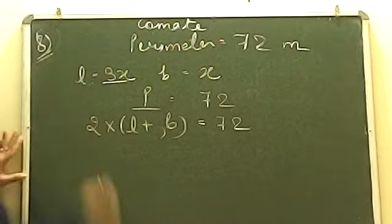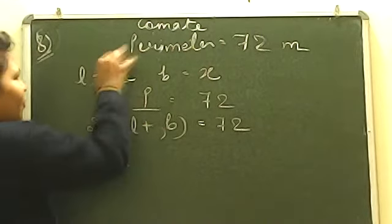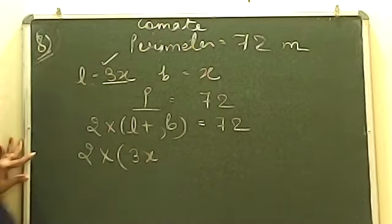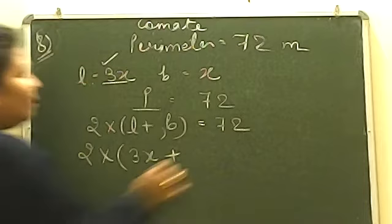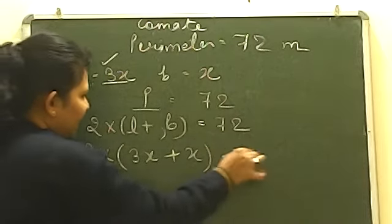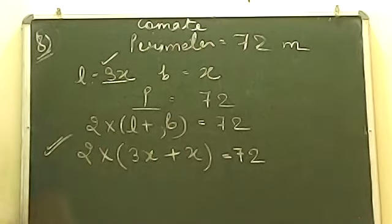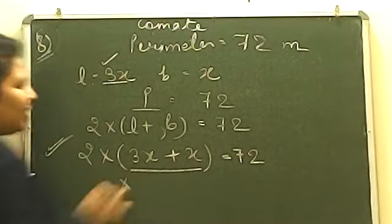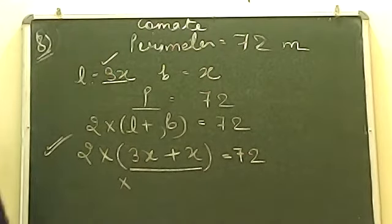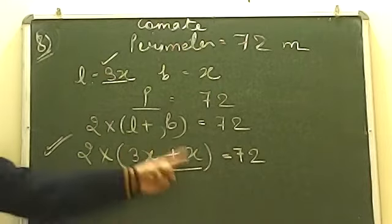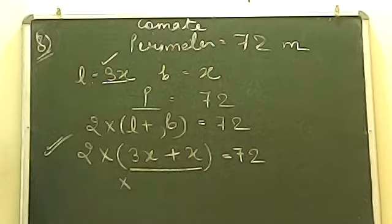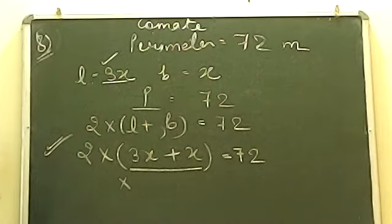Let us put in the values we know: 2 into (3X plus X) equals 72. From inside the bracket, 3X plus 1X equals 4X — just as 3 pencils plus 1 pencil gives 4 pencils. So we have 2 into 4X.